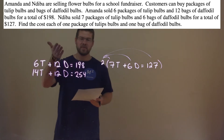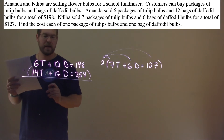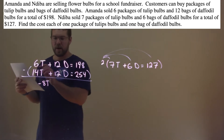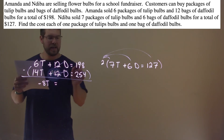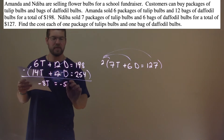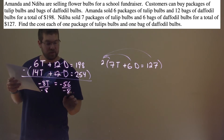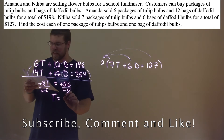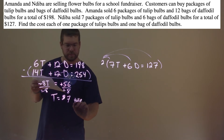If we subtract the two equations, the 12s will cancel on purpose. So 6t minus 14t is negative 8t, and 12d minus 12d cancels. Don't forget the subtraction goes to everything: 198 minus 254 is negative 56. Divide both sides by negative 8 — the negatives cancel — and t equals 56 divided by 8, which is 7. So $7 is the price of the tulip bulbs package.